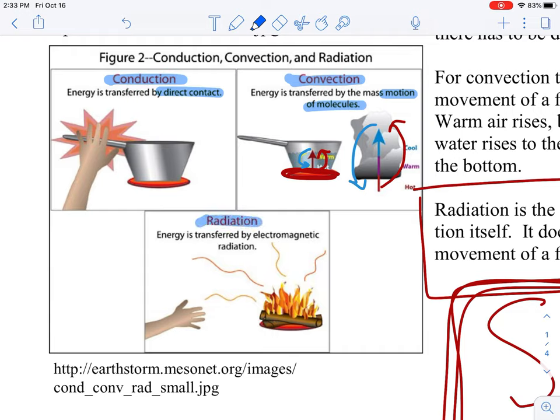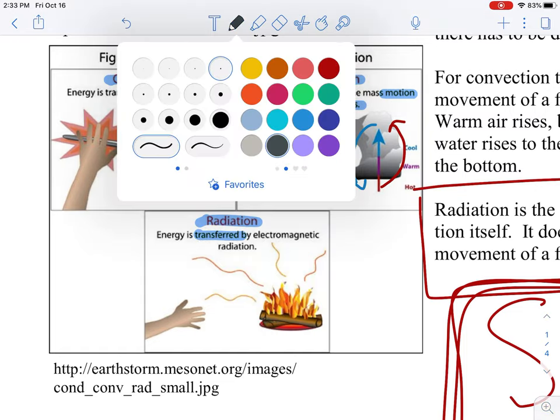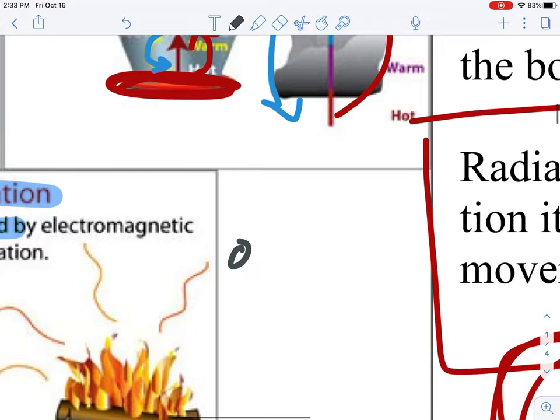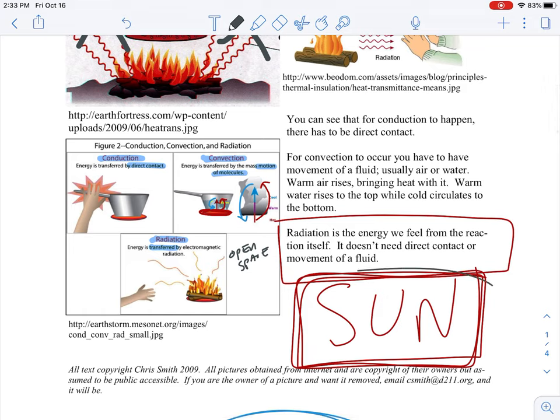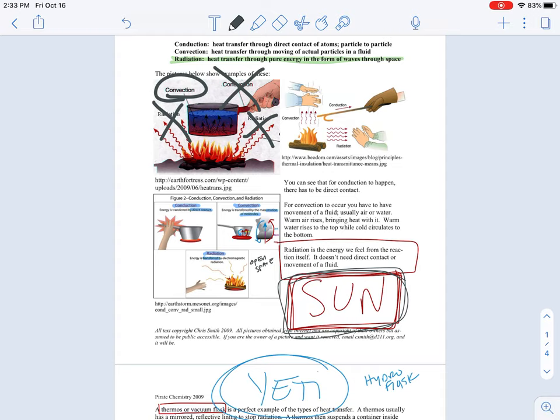And that's the transfer through an open space. So if we just take one more note on here, we would say open space. And that's the sun. That's the main one or heat lamps. Or some certain types of space heaters in a house. And that's how that works. Three main types of heat transfer.